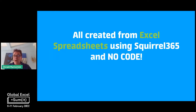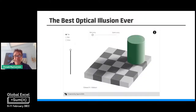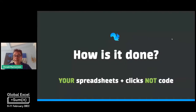This is not a coding environment. All the logic behind all of these is written in your spreadsheet — there's nothing else to do, nowhere else to go. You have to do it in the spreadsheet so you can really leverage those skills you already have. And we'll look at this in Squirrel later to demonstrate how this can possibly be based on an Excel spreadsheet. So how is all this done? Using your spreadsheets and clicks, not code.